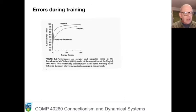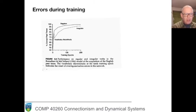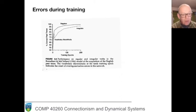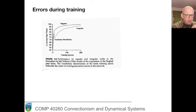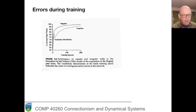A slide shows the errors produced by this network over training. The y-axis is percent correct productions, and there are two plots. One for regular verbs, which simply get better and better. And one for irregulars, where there's an abrupt drop and then gradual improvement. So this looks absolutely wonderful — it looks like the connectionist model robustly challenges the claim that there are multiple different learning procedures going on inside the child.